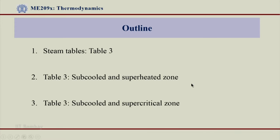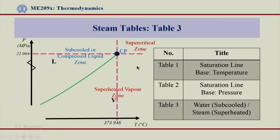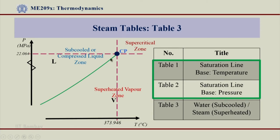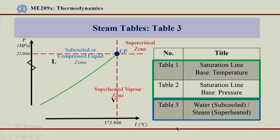Let us go back to our PT diagram and understand how different properties in Table 3 are given. To summarize: anything that lies on the LV saturation line is dealt with by Table 1 and Table 2 — one can get the properties of all states on that saturation line from those tables. But for other zones — the sub-cooled or compressed liquid zone, the superheated vapor zone, and the supercritical zone — all properties come from Table 3.